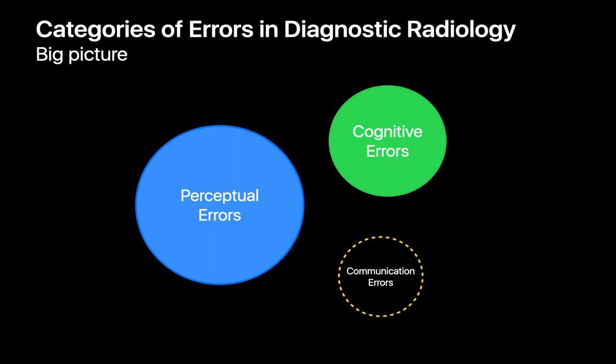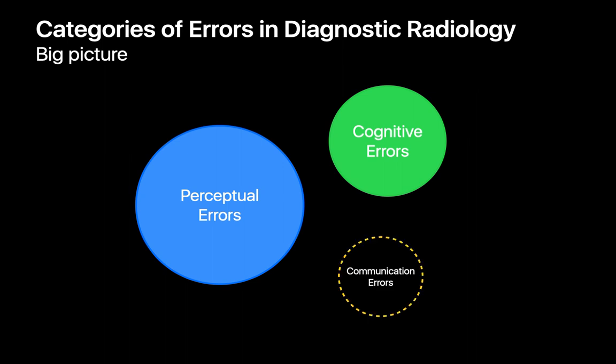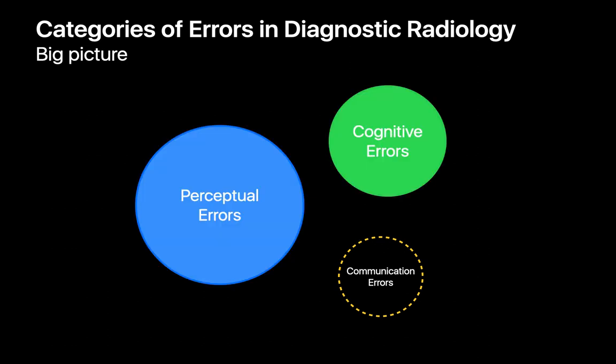Communication errors are neither perceptual nor cognitive, but errors that occur when a radiologist saw the finding, correctly understood its meaning, but somehow that understanding was not successfully conveyed to the referring provider or patient. It would be like if a radiologist saw a spiculated lung nodule, correctly called it lung cancer, but somehow the message never made it to the referring provider or patient.